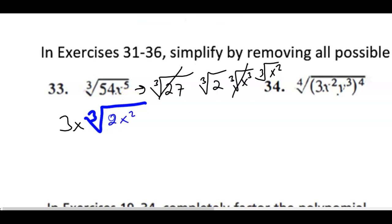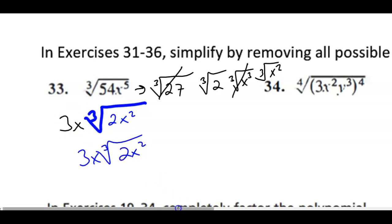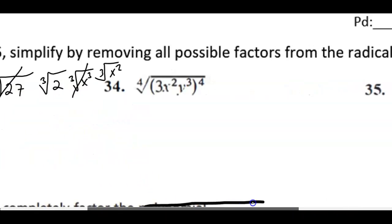So we get 3x times the cube root of 2x squared — that's our answer.